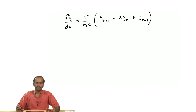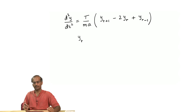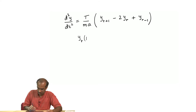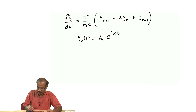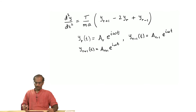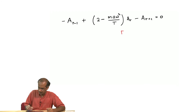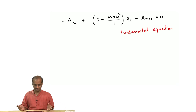We are going to adopt the same general technique as last week. We assume that y_r, the displacement at the rth position, is time-dependent: y_r = a_r * e^(i*omega*t). Similarly we can write equations for y_{r-1} and y_{r+1}. Substituting these three expressions for the displacement back into the equation of motion gives a fundamental equation — it is called that because from it we can work out pretty much everything we need.